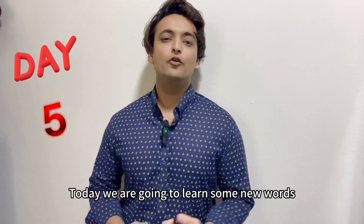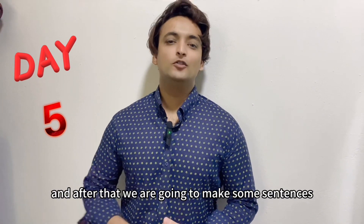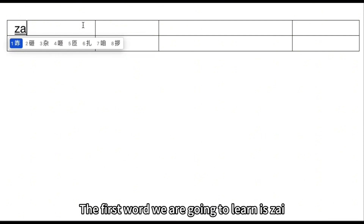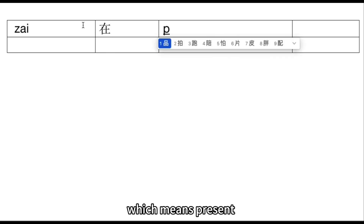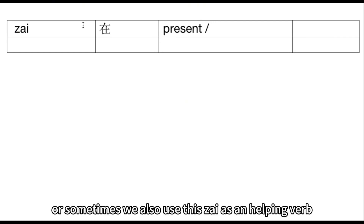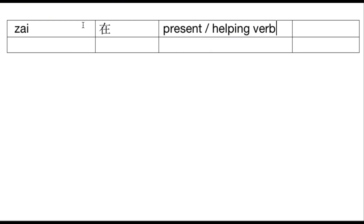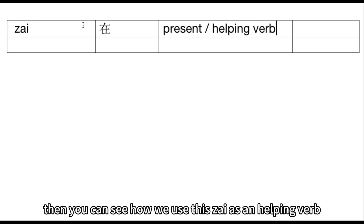Welcome to Day 5. Today we are going to learn some new words and after that we are going to make some sentences. The first word we are going to learn is 在 (zài), which means 'present' or it is also used as a helping verb. After that we are going to make some sentences and see how we use 在 as a helping verb.